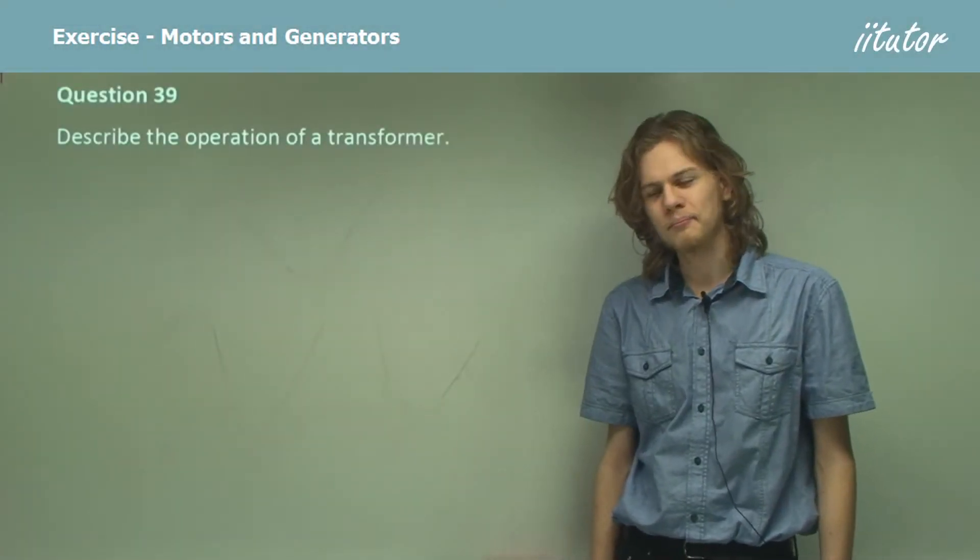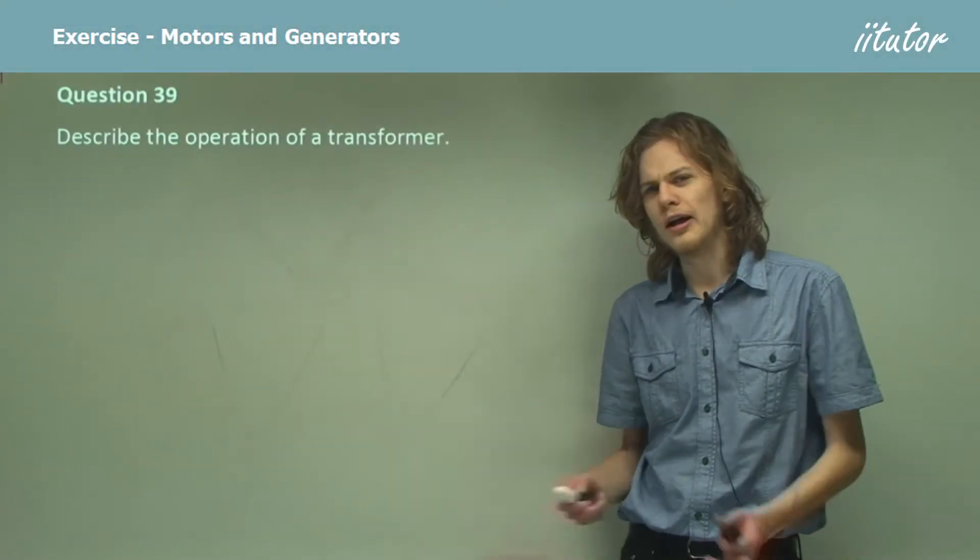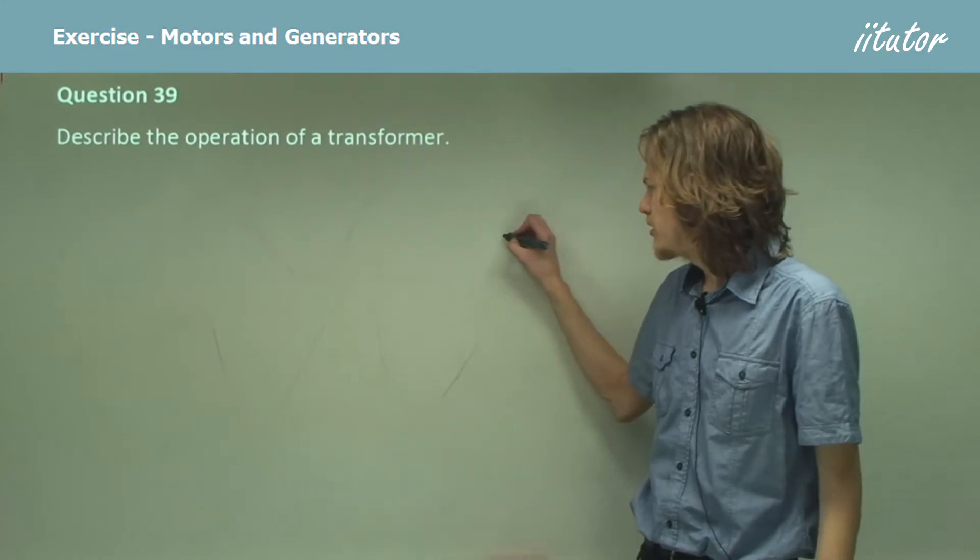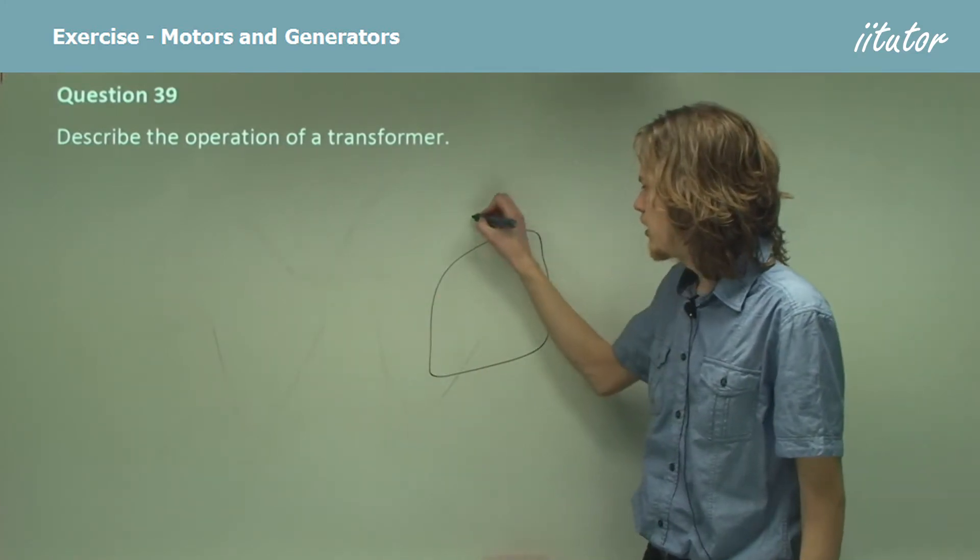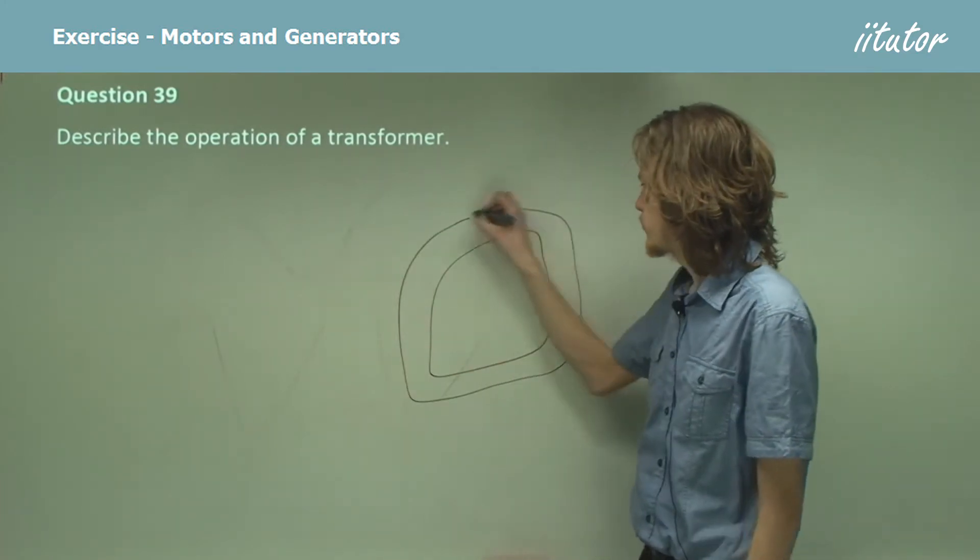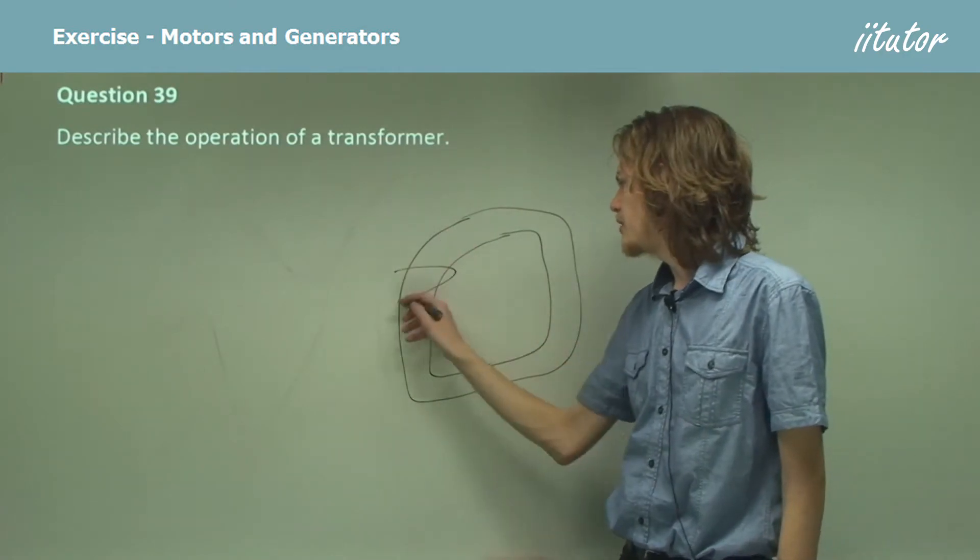Describe the operation of a transformer. Now what does a transformer look like? It's basically an iron core with a coil wrapped around each side, right?